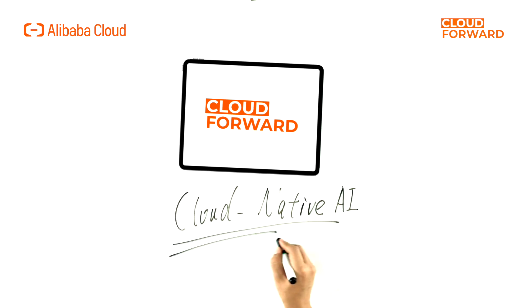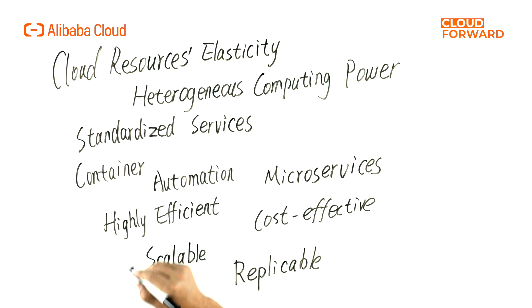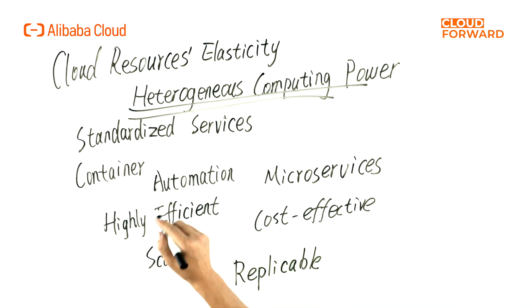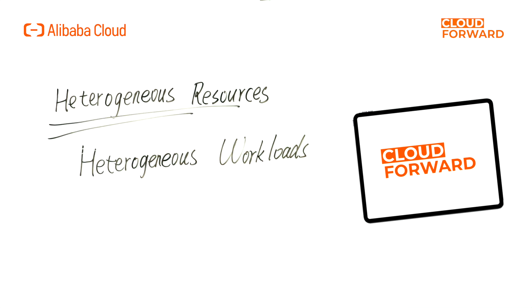As early as 2020, Alibaba Cloud introduced the concept, core scenarios, and reference technical architecture of cloud-native AI. Alibaba Cloud believes that cloud-native AI fully utilizes cloud resources, elasticity, heterogeneous computing power, standardized services, as well as cloud-native technologies such as Container, Automation, Microservices, etc., to provide an end-to-end solution for AI/ML that is highly efficient, cost-effective, scalable, and recyclable. In addition, Alibaba Cloud focuses on two core scenarios of cloud-native AI: supporting continuous optimization of heterogeneous resource efficiency and supporting efficient operation of AI and other heterogeneous workloads.